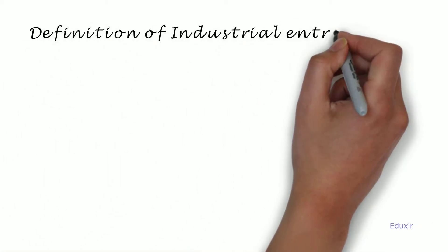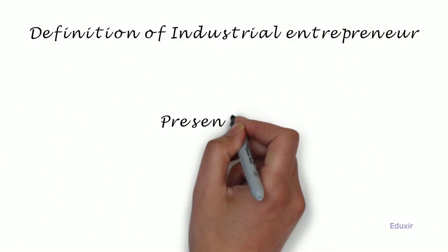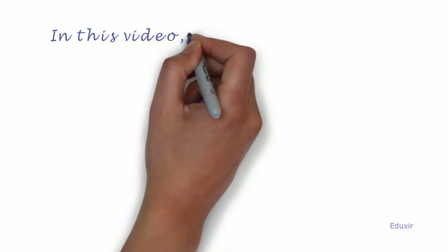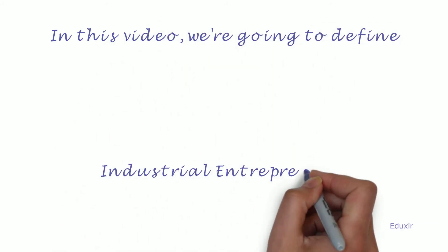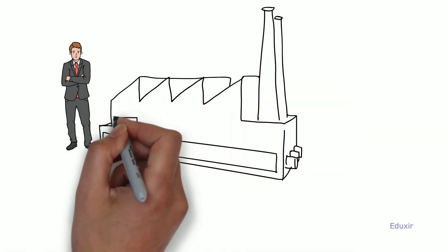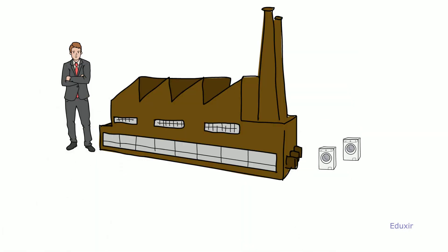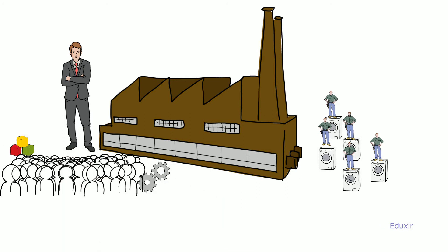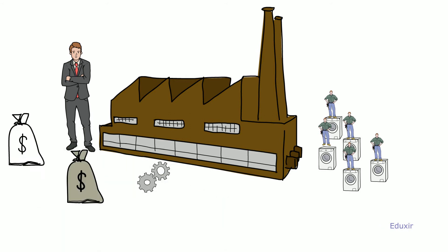Presented by reduxid.com, in this video we are going to define Industrial Entrepreneur. An industrial entrepreneur is one who establishes an enterprise that manufactures products or provides services which are highly in demand. They exploit economic resources to economically viable ventures.